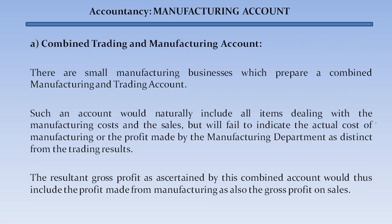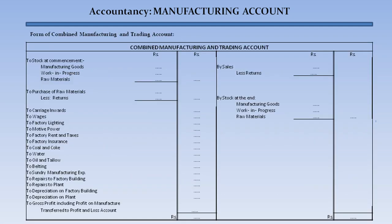There are small manufacturing businesses which prepare a combined manufacturing and trading account. Such an account would include all items dealing with manufacturing costs and sales, but will fail to indicate the actual cost of manufacturing or the profit made by the manufacturing department as distinct from trading results. The resultant gross profit from this combined account would include the profit made by manufacturing as also the gross profit on sales.